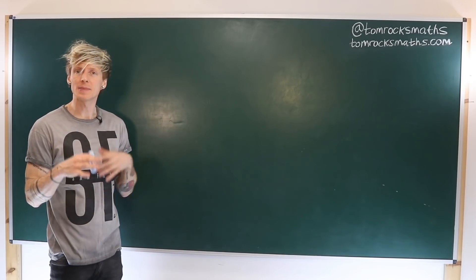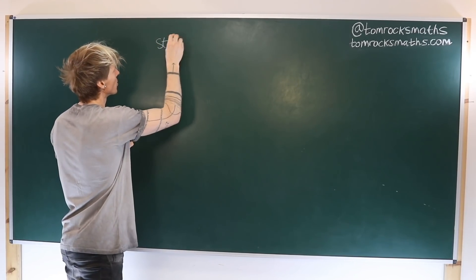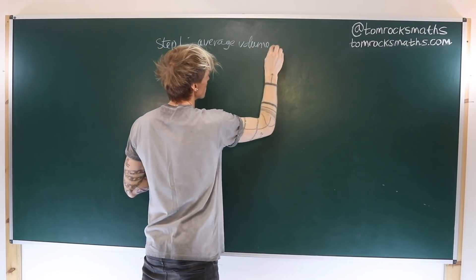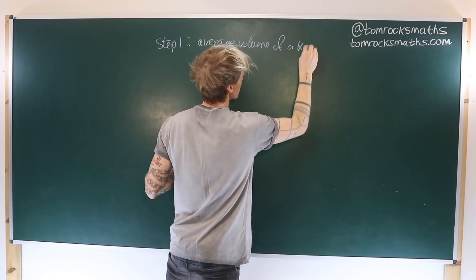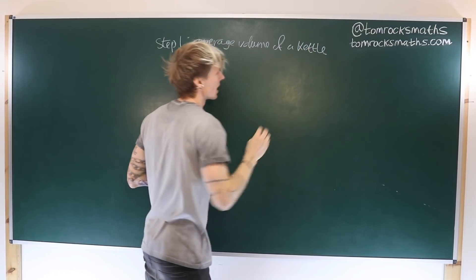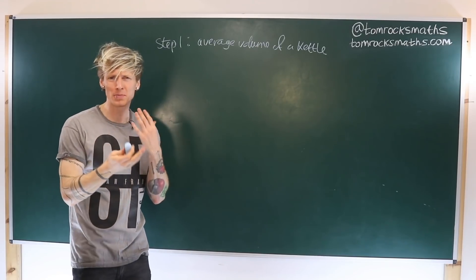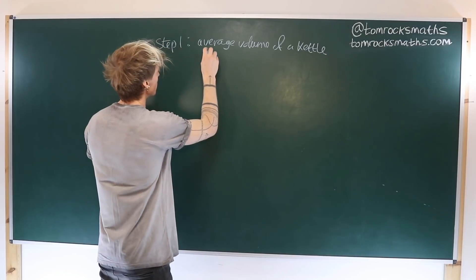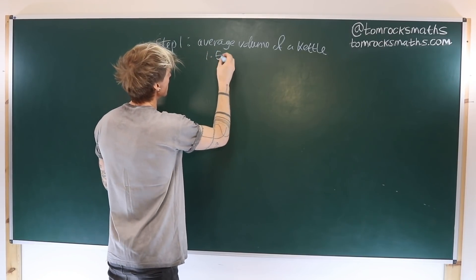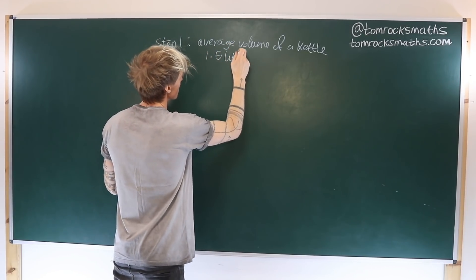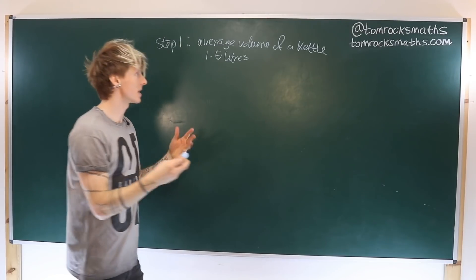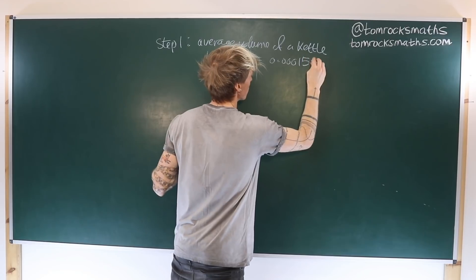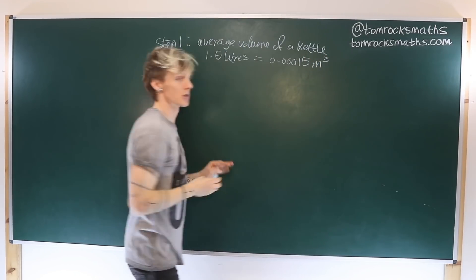Step one is going to be to estimate the average volume of a kettle. Based on my experience of kettles in the UK, I would say the average volume is probably between one or two litres. So I'm going to take a value of 1.5 litres to be my average kettle volume, which is equal to 0.00015 metres cubed.